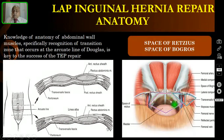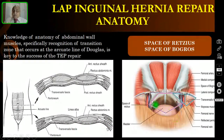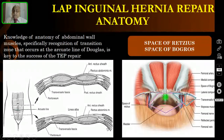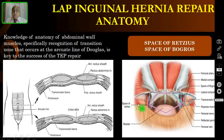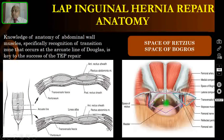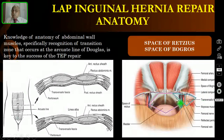After entering into the anatomical space, you have to go towards the pelvis where you will see the pubis. The space between the pubic symphysis and the bladder is called the space of Retzius. Then you have to go laterally — this is a diamond-shaped space — and this lateral space is called the space of Bogros. Both these dissections are very important in TEP repair.